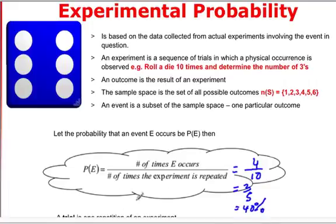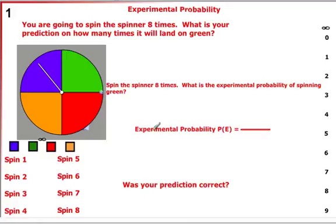So now, if we take a look at a spinner, you're going to have access to an online spinner where you can actually perform an experiment like this. So let's say we spin, and first time we get a red, and the question is, what is your prediction on the number of times it will land on green? Well, you're probably going to say somewhere around the neighborhood of two, because there's a twenty-five percent chance of getting green.